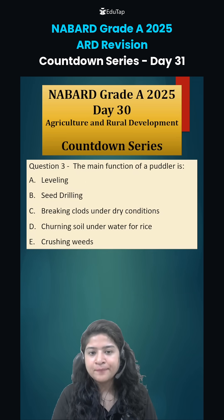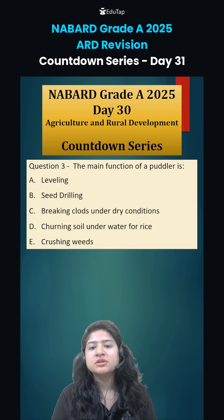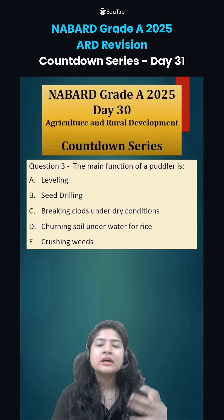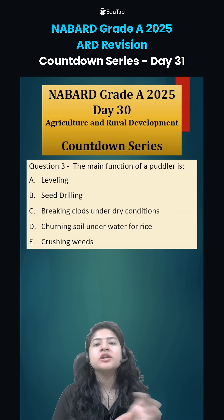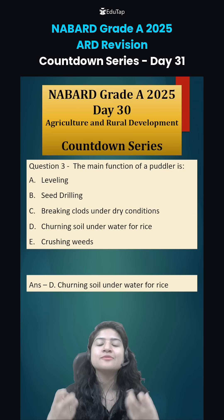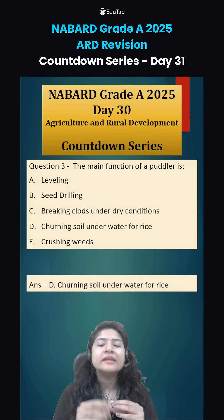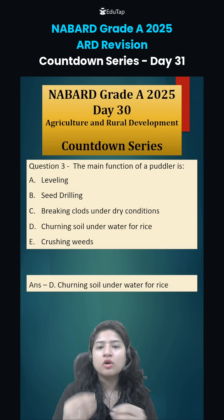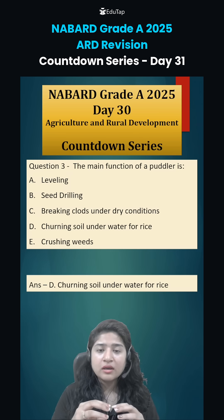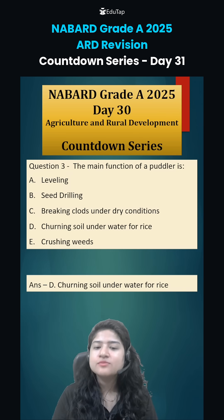Coming to question number three, the main function of a puddler is churning of soil. This is again used in rice fields. In rice fields, puddling is very important — that is the turning of soil so that soil clots can break and the soil becomes smooth.